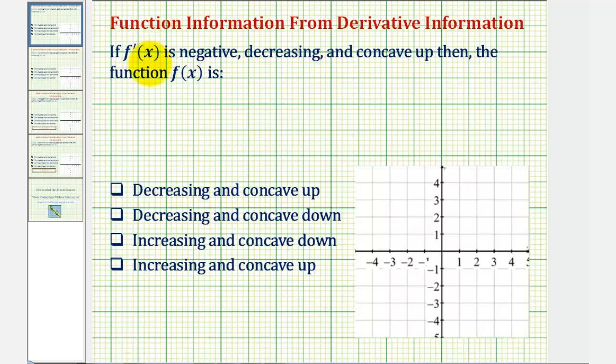If the first derivative is negative, the function is decreasing. As we're told that f prime of x is negative, or less than zero, this tells us that the function f of x is decreasing.